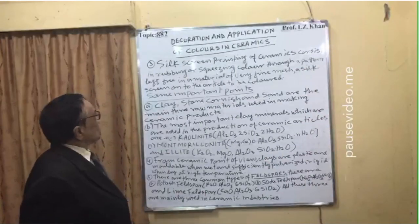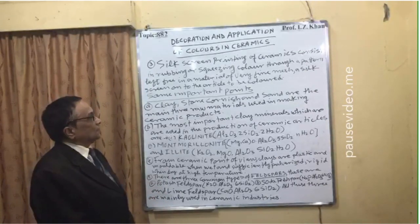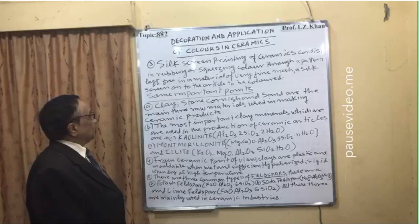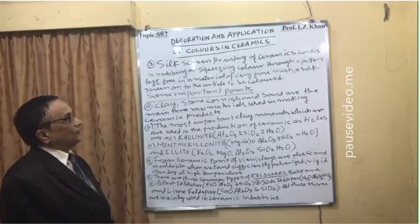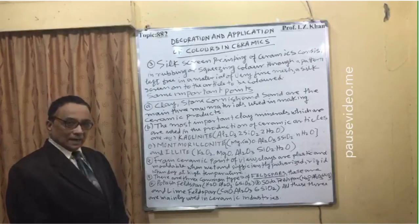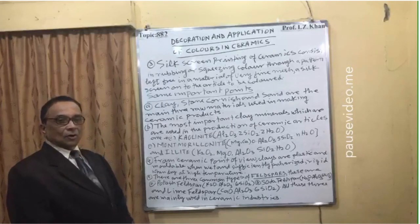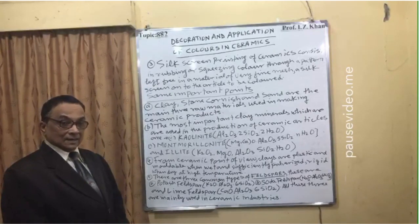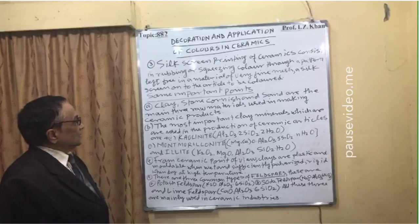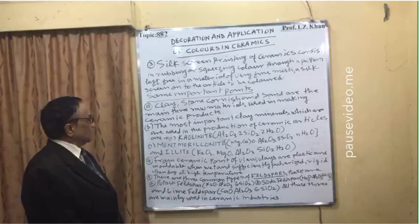In silk screen printing for ceramics, the process consists of rubbing or squeezing color through a pattern left free in a material of very fine mesh — a silk screen — onto the article to be colored. There are some very important points in the ceramic industry that those involved must remember. The main raw materials are clay, Cornish stone, and sand — the three main raw materials used in making ceramic products.